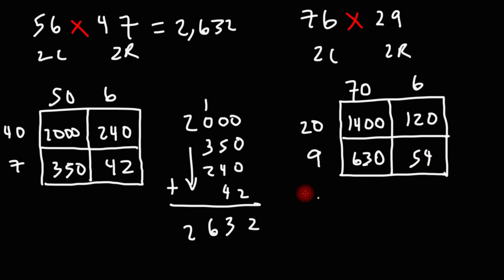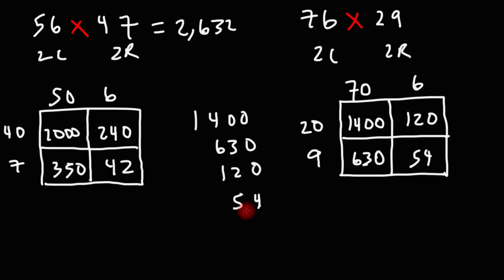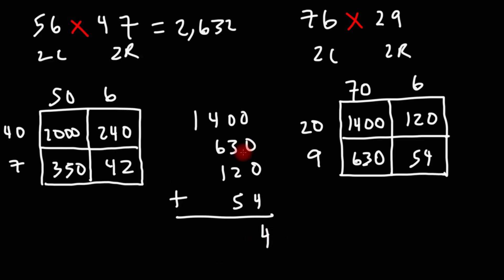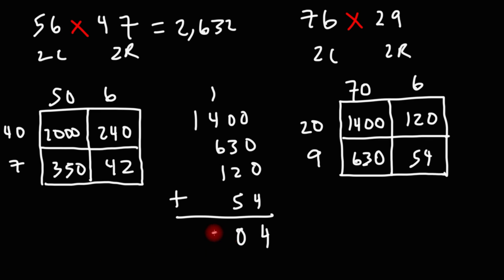So now let's add the numbers. We have 1,400, 630, 120, and 54. In the first column all we have is a 4. For the second column we have 3 plus 2 which is 5, plus another 5, that's 10; write the 0, carry over the 1. 4 plus 6 is 10, plus 1 and 1, that's going to be 12; write the 2, carry over the 1. 1 plus 1 is 2. So 76 times 29 is 2,204.